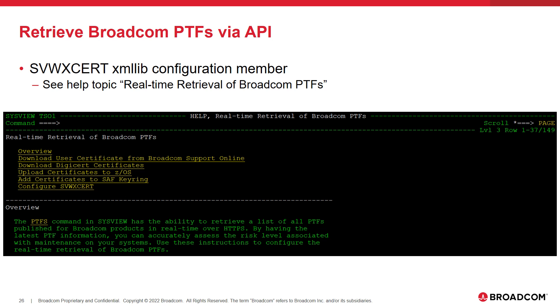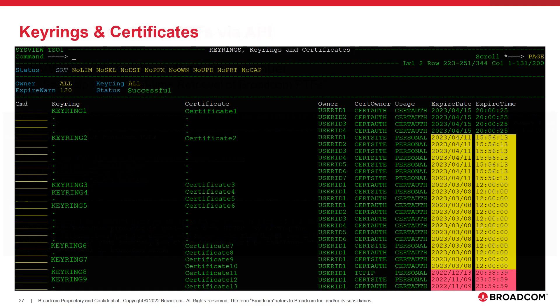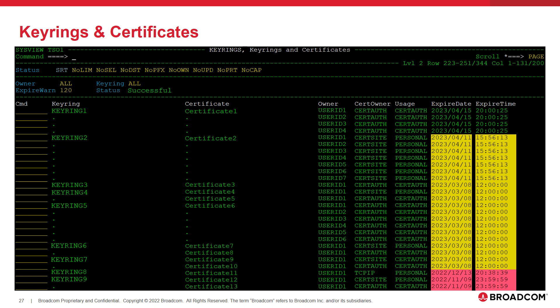One topic discussed in the help topic is configuring a SAF keyring name that contains a Broadcom certificate that SysView will use to communicate to the HTTPS API. When configuring the SAF keyring name for the API, Sherman can use the keyrings command to see a list of keyrings defined and certificates connected to each keyring. Sherman can also use this command to view detailed information about each certificate, including certificate expiration dates. Expiring certificates can also introduce risk on Sherman's systems.